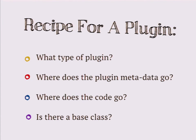Once you know what type of plugin you're creating, that will tell you where to define the metadata for that plugin — the information Drupal would want to know about your plugin without actually having to turn it on: what's the name of the plugin, what's its unique ID. You might put it in a doc block. There are actually a handful of different ways, but it depends on what type of plugin you're implementing. You need to know where the code goes so that when Drupal wants to execute the code it can find it.